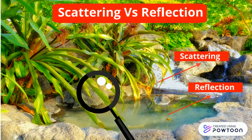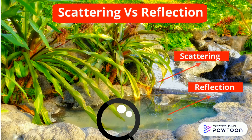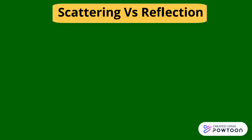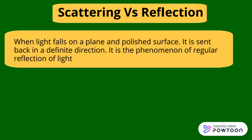The microscopic view of the surface of a leaf and the surface of water reveals the reason behind this difference. When light falls on a plain and polished surface, it is sent back in a definite direction. It is the phenomenon of regular reflection of light.